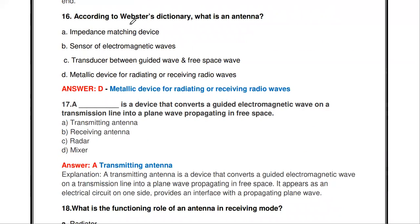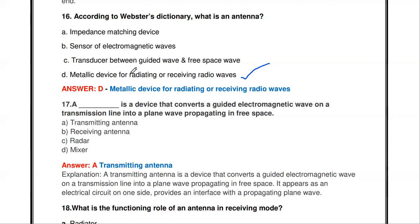The next question: according to Webster's dictionary, what is an antenna? Options are: impedance matching device, sensor of electromagnetic waves, transducer between guided wave and free space, or metallic device for radiating or receiving radio waves. All four things are definitions of the antenna. As per Webster's dictionary specifically, an antenna is a metallic device for radiating or receiving radio waves, but all four definitions apply.